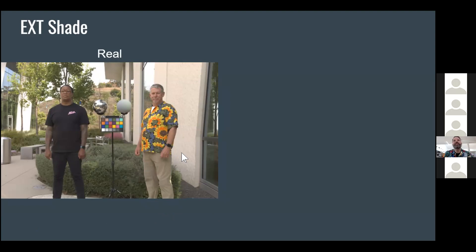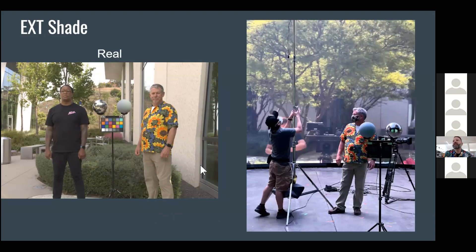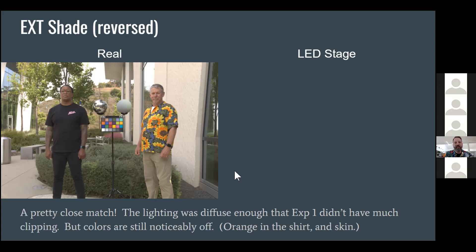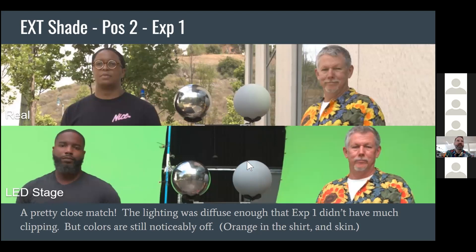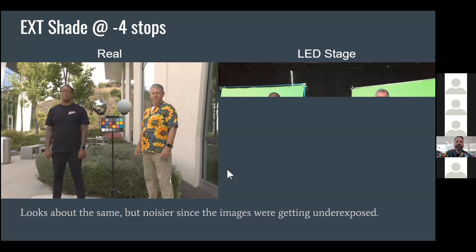Finishing up with our exteriors: the environment that worked best was the exterior shade. We didn't have a big dynamic range problem, and putting it on the panels actually felt like being outside again. It seems cloudy days or shady days are good for virtual production lighting. The result matched pretty well right out of the box because there wasn't much clipping of the environment within the available dynamic range. Looking closely, key-to-fill ratios looked pretty good. The only problem was a reddish-pink shift on the skin tones, and the shirt still looked quite different under LED stage lighting compared to natural illumination.